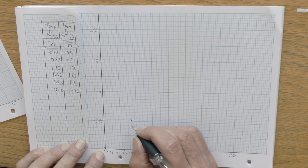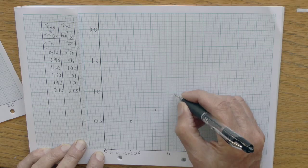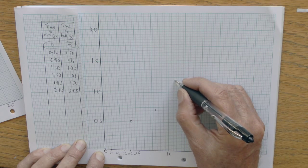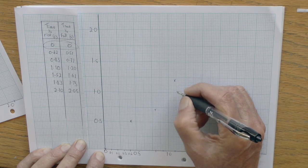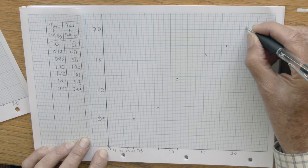Once the scales are decided and the axes drawn, the points have to be plotted carefully. You can see, as these are being plotted, that the points fall roughly into a straight line, but not exactly.